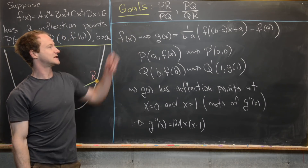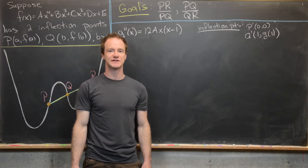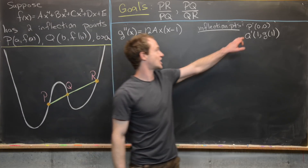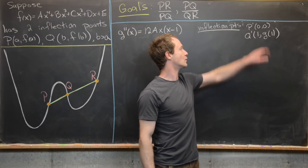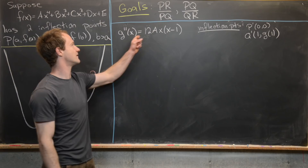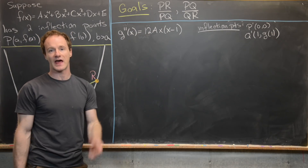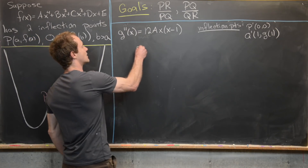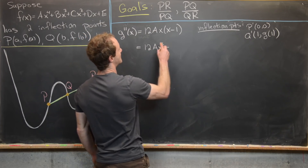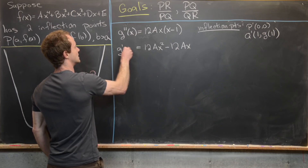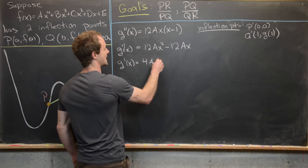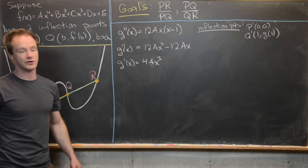Summarizing: after the similarity transformation, original inflection points (A, F(A)) and (B, F(B)) became P′ at the origin and Q′ at (1, G(1)), and we established that G″(x) = 12A · x(x − 1) = 12Ax² − 12Ax. Taking the antiderivative gives G′(x) = 4Ax³ − 6Ax² + B, where the constant of integration is called B (distinct from the earlier B).